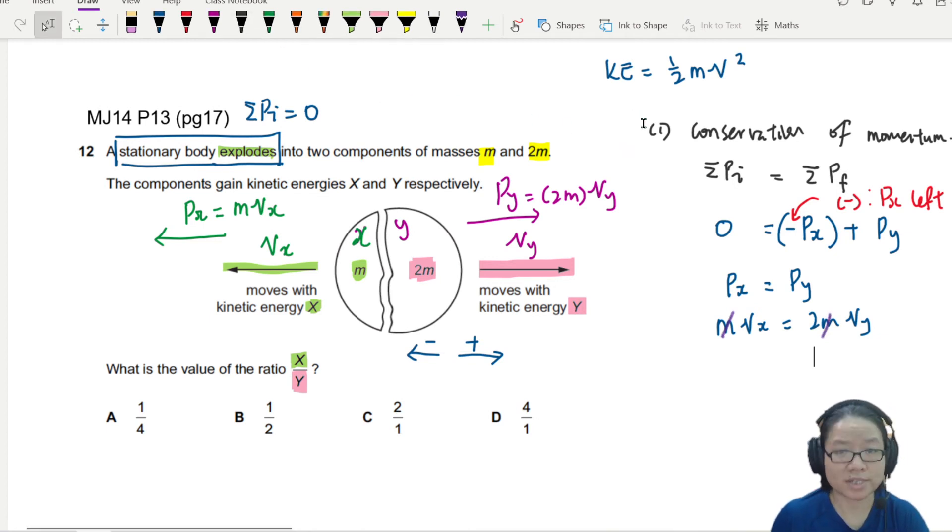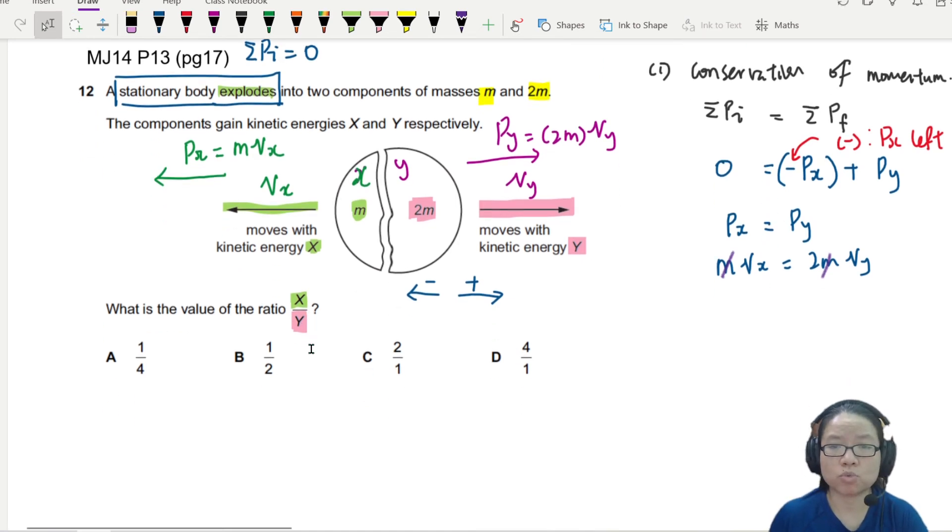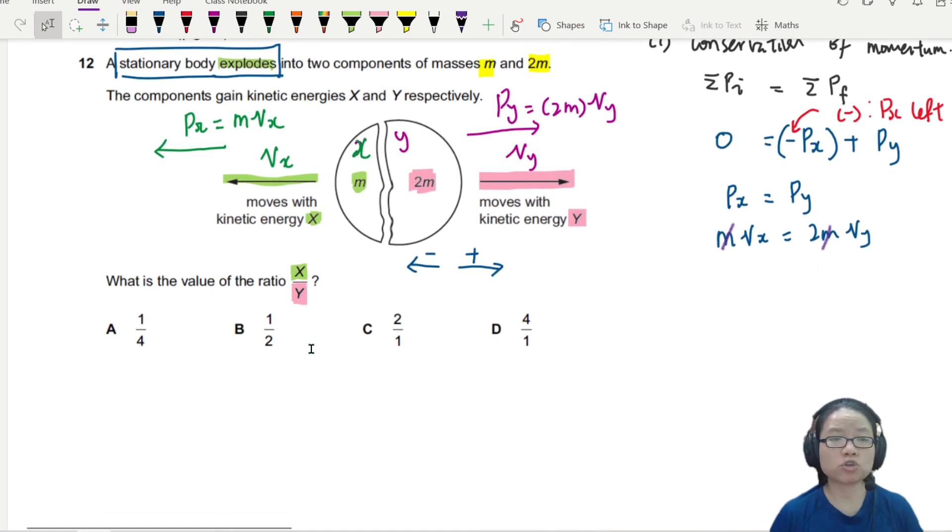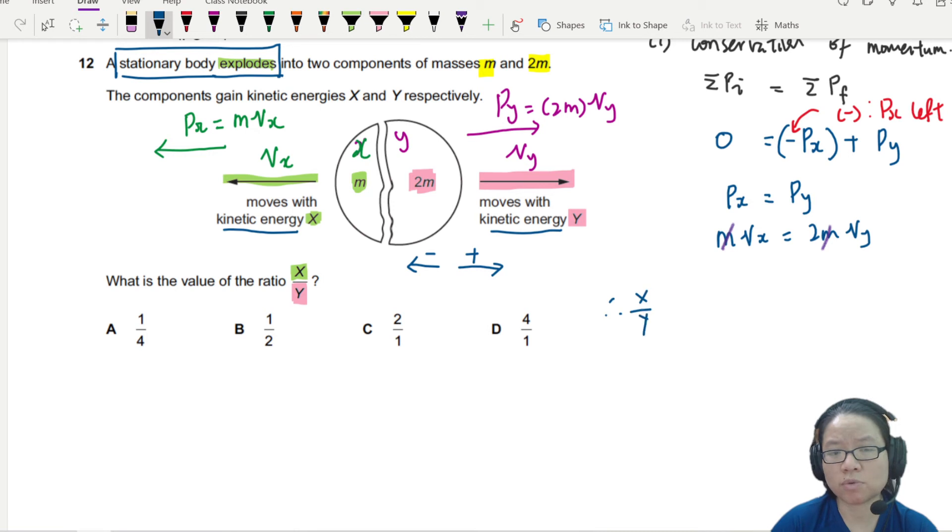So back to the question at hand. In this question, we are asked to find the ratio of x to y. Or in other words, we want to find the ratio of kinetic energy of x and then kinetic energy of y. So hence, x over y will be equal to.